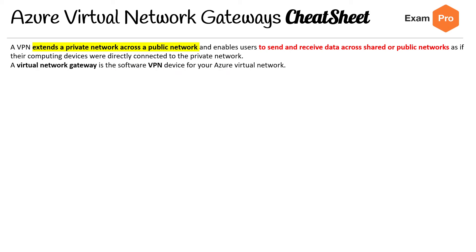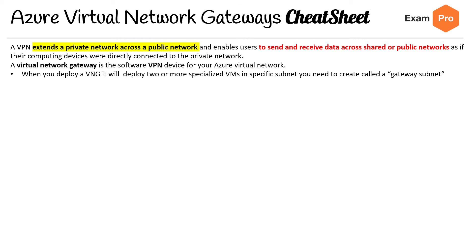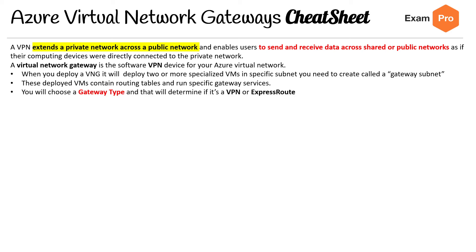A Virtual Network Gateway (VNG) is the software VPN device for your VNet. When you deploy a VNG, it will deploy two or more specialized VMs in specific subnets — you need to create what is called a gateway subnet. These deployed VMs contain routing tables and run specific gateway services. You will choose gateway types, and that will determine if it's a VPN or ExpressRoute gateway.